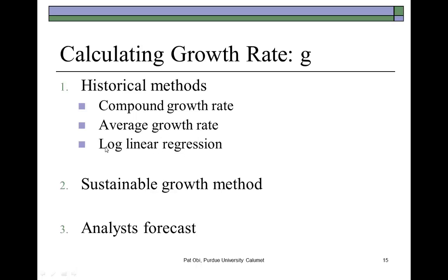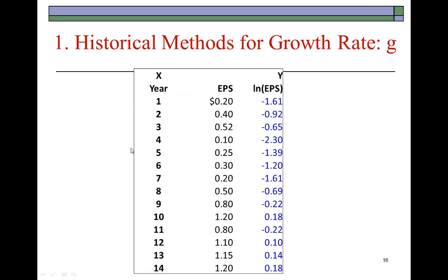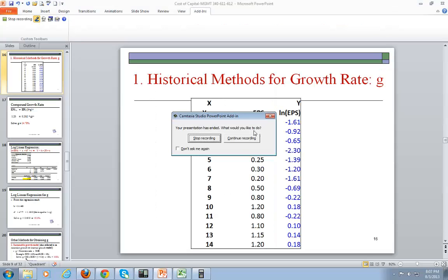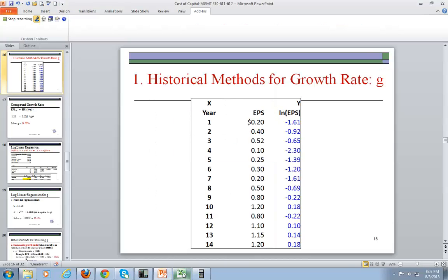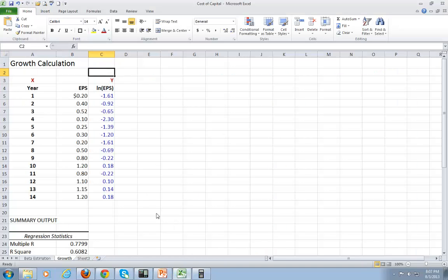The most rigorous approach, though, is the log-linear regression approach. In the log-linear regression approach, we do a logarithmic transformation of earnings per share and then regress it on year. Your years could be in calendar years or in sequential order — we just want to know the rate at which earnings per share has been growing. Here I show it on Excel.